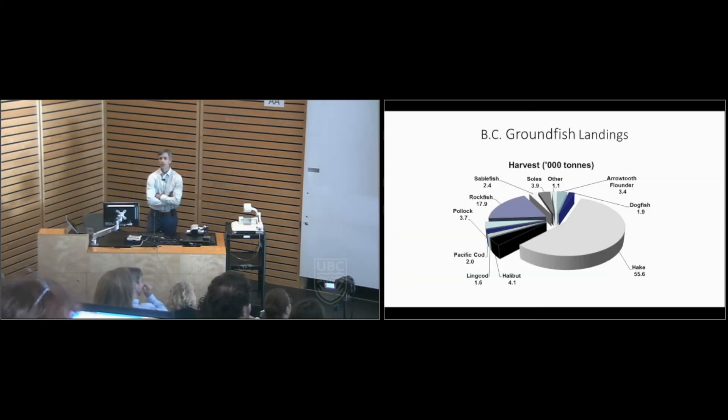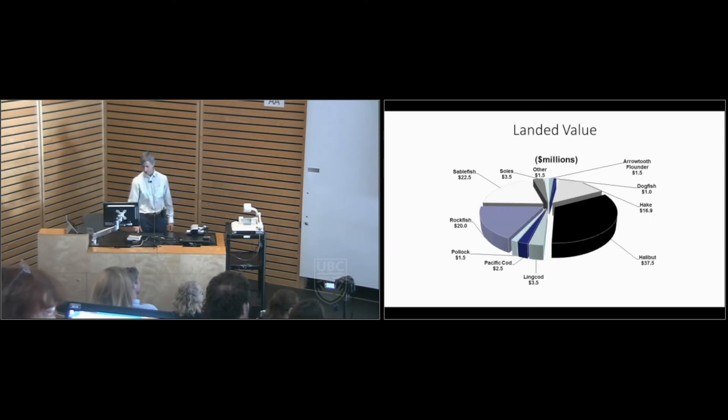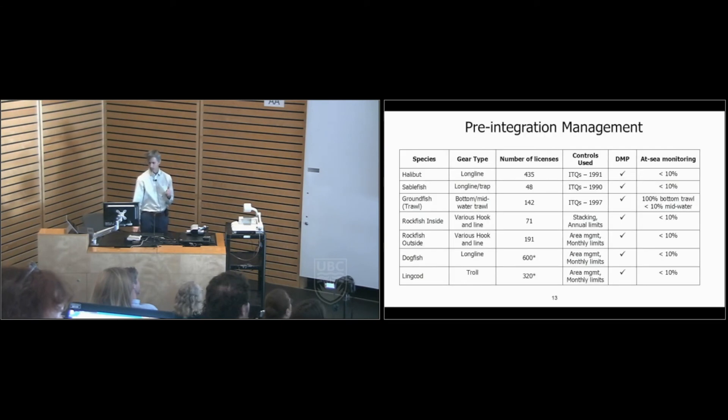So here's a quick snapshot of what the landings look like. Interesting to note here, for this and the next slide, hake, halibut, and sablefish. So just three examples of some of the species that are caught. Hake is a very large volume fishery. By comparison, sablefish and halibut are low volume. But when you go to the value, things change a lot. Halibut is very high value, so is sablefish. Hake much less so. So the fisheries are very distinct. Some are all about volume to make their money and others are really about the value per pound.